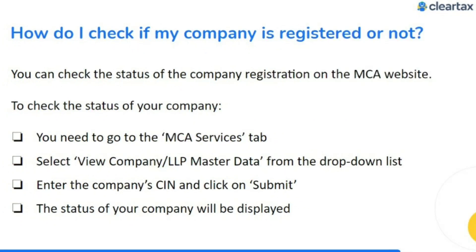How do you check if your company is registered or not? You can check the status of the company registration on the MCA website. Go to the MCA services tab and select 'View Company/LLP Master Data' from the drop-down list. Then enter the company CIN and click on submit. The exact status of your company will be displayed.